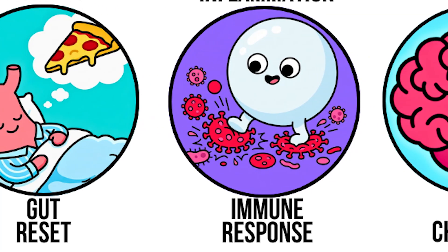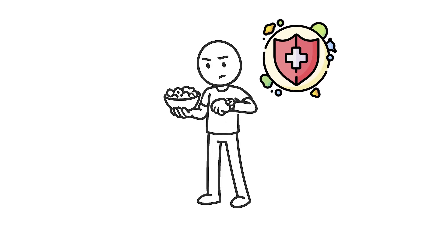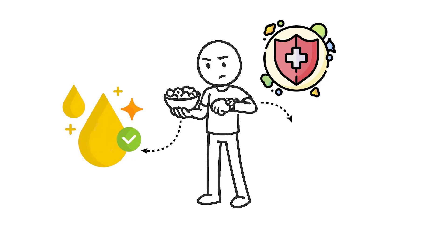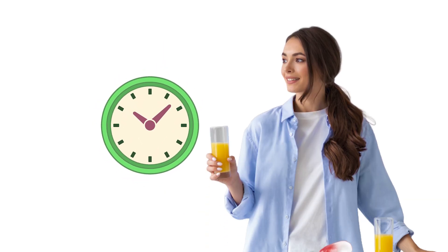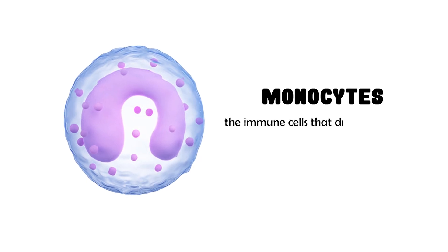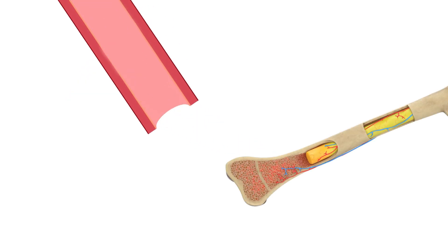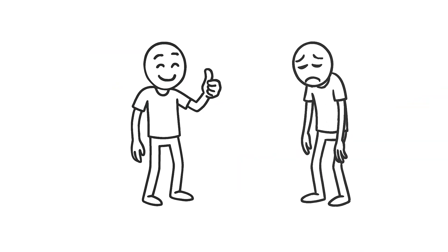Immune system recalibration. Fasting doesn't boost your immune system the way a vitamin might. It does something more useful: it clears out old immune cells and replaces them with new ones. During the first several hours of a fast, white blood cells start to drop. Monocytes, the immune cells that drive inflammation, leave the bloodstream and return to the bone marrow. It may look like the system is weakening, but it's actually clearing house.